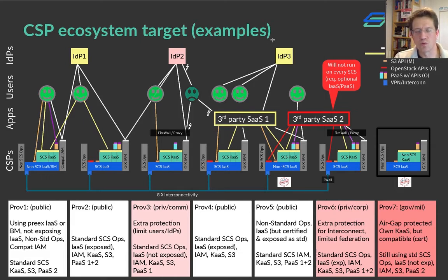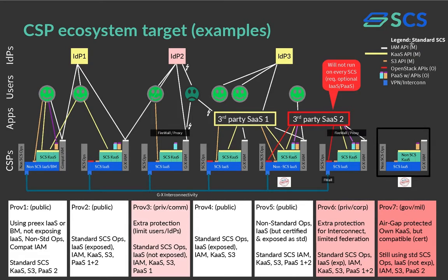This is how we believe the ecosystem should look like. It's a busy picture — we have an ecosystem of seven different cloud providers here that collaborate to different degrees. One thing they all have in common is that they all provide a certain set of compatible APIs. Looking at the legend, we see the APIs for identity and access management in white, and the Kubernetes-as-a-service APIs, which are mandatory in the SCS standard. We also see the S3 object storage API, which is a mandatory part of the standard.